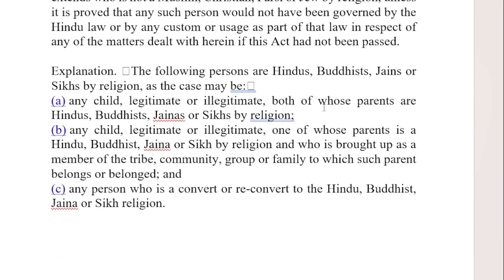In the explanation, it is stated: the following persons — who are Hindu, Buddhist, Jain, or Sikh — if there is any child in these cases, whether that child is legitimate or illegitimate, they are covered. Legitimate children are those born from married parents, and illegitimate are those born outside of marriage.